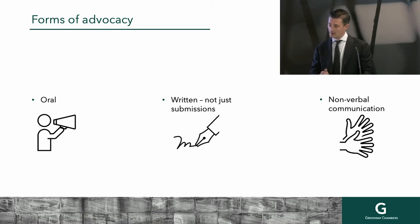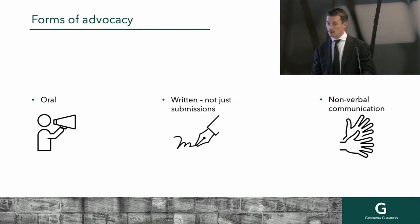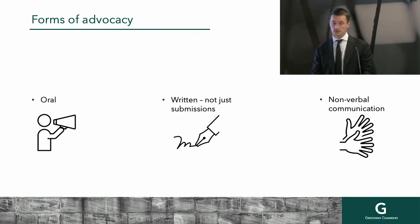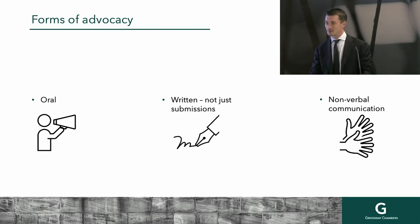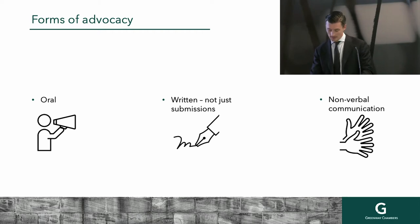One thing to keep in mind is the audiences for particular pieces of written correspondence. You can have different audiences depending on when or how something is read. For example, you might have a letter going to the other side — the immediate audience is the firm of solicitors — but the ultimate audience is the judge who's going to read that letter if it makes its way into evidence. So what tone are you going to pitch that at? Are you going to come across as more reasonable than your first draft? Always keep that ultimate audience in mind in your written advocacy.